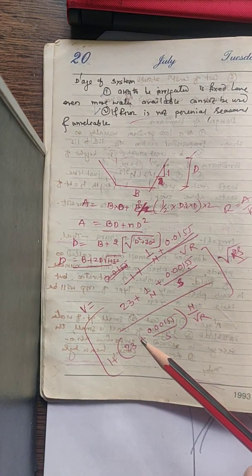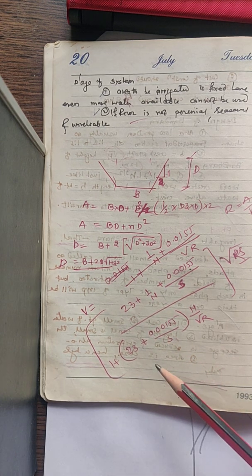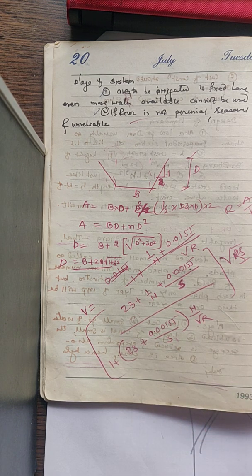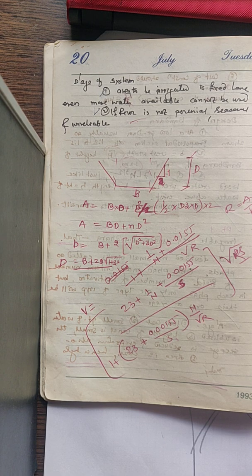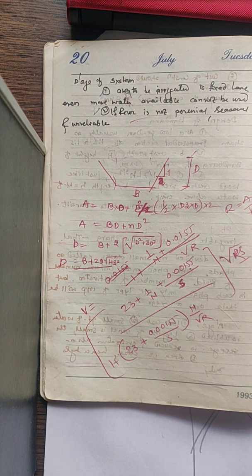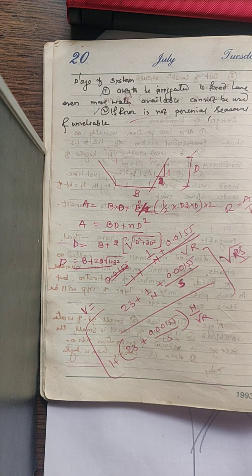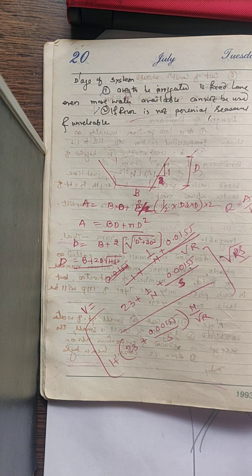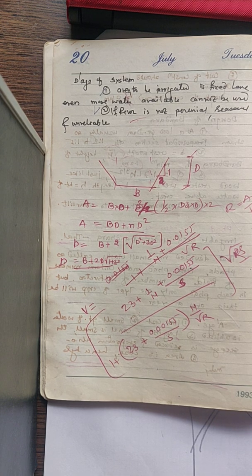Disadvantage: the area to be irrigated is fixed, and even if more water is available we cannot use it. The second disadvantage is that if the river is not perennial, supply becomes seasonal or unreliable. In the next lecture we will see the design of irrigation channels — canal and channel are the same thing — and there will be numericals on the design of irrigation channels in the examination.